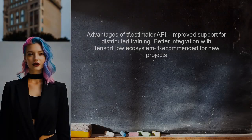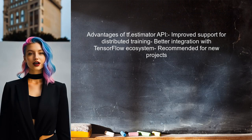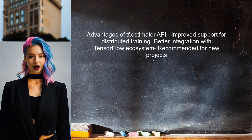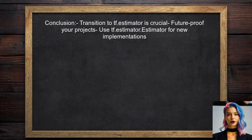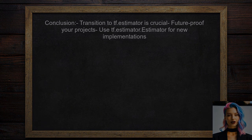Additionally, the tf.estimator API includes improved support for distributed training and better integration with TensorFlow's ecosystem, making it the preferred choice for new projects. Finally, while both APIs may seem similar, the transition to tf.estimator is crucial for future-proofing your projects. You should start using tf.estimator.estimator for any new implementations.